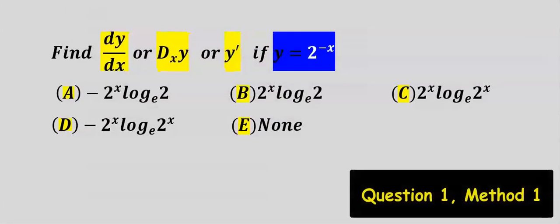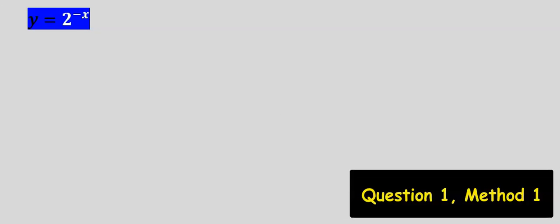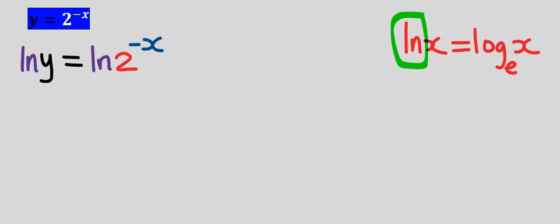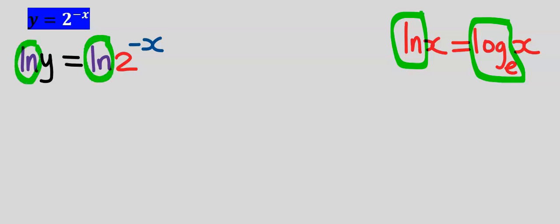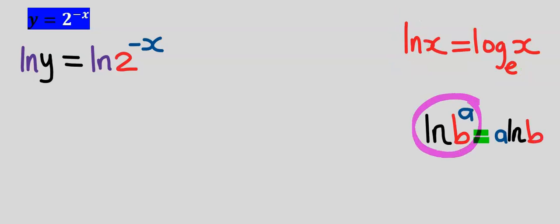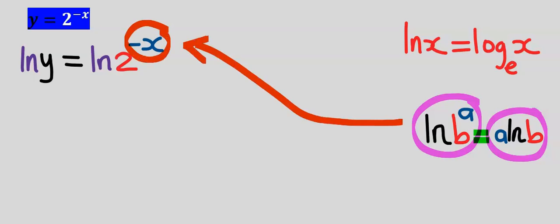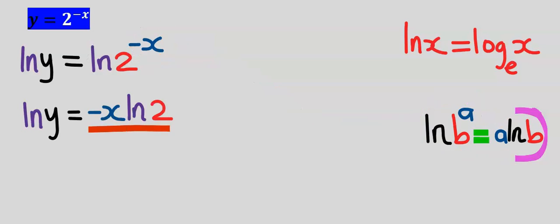Consider this question. To solve this problem, step number one: take the natural log of both sides. You can use either form, but in this question I'm going to use this one. Next, the natural log of b to the power of a equals a multiplied by the natural log of b. I'm going to apply this rule, bringing the minus x power to the front of the natural log.